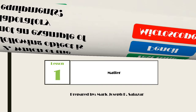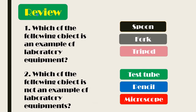First, let us review. Which of the following objects is an example of laboratory equipment: spoon, fork, or tripod? Yes, you are correct — the answer is tripod. The spoon and fork are not examples of laboratory equipment.